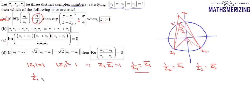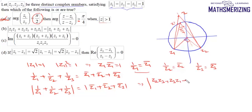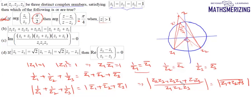So 1/Z1 + 1/Z2 + 1/Z3 equals Z̄1 + Z̄2 + Z̄3. If two complex numbers are equal, their moduli are also equal, so mod of (1/Z1 + 1/Z2 + 1/Z3) equals mod of (Z̄1 + Z̄2 + Z̄3). Taking LCM on the left-hand side gives mod of (Z2Z3 + Z3Z1 + Z1Z2) upon (Z1Z2Z3). And since conjugate distributes over addition, the right side is mod of the conjugate of (Z1 + Z2 + Z3).